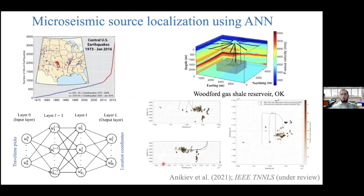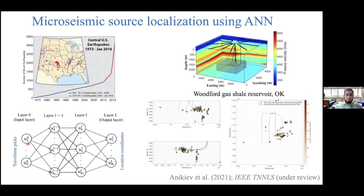Another project, done with Dennis, is on microseismic event location applied to the Woodford gas shale reservoir. We use a feed-forward neural network — similar to the US presidents example — where we feed travel-time picks recorded at receivers, and the network outputs location coordinates: x, y, and z in a 3D model. We managed to get very good event locations in near-real-time.